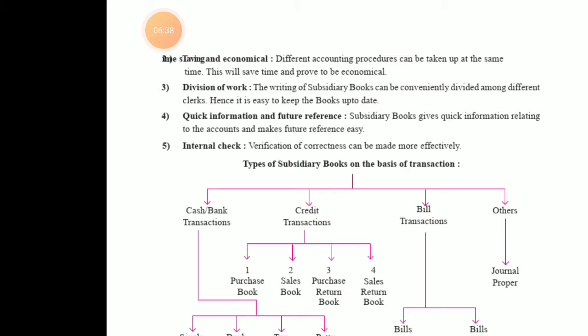Next is internal checks. When separate clerks maintain separate books of account, there will be an internal check on each and every transaction. That is why it is very important that each category — such as purchase, sales, sales return, and purchase return — has its own book maintained. This ensures internal control over all transactions.